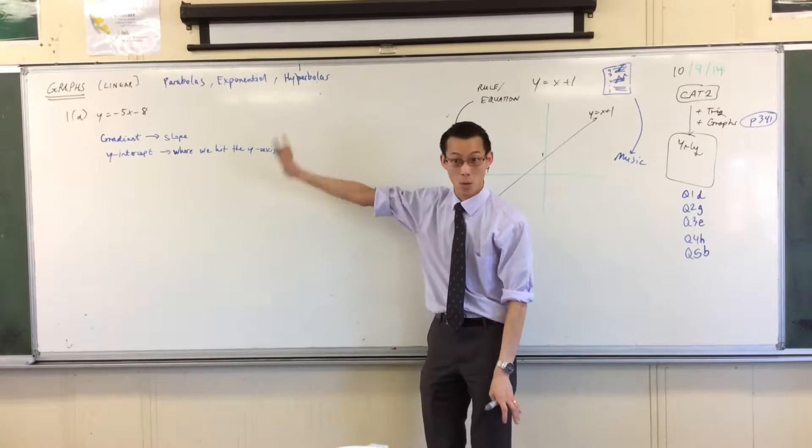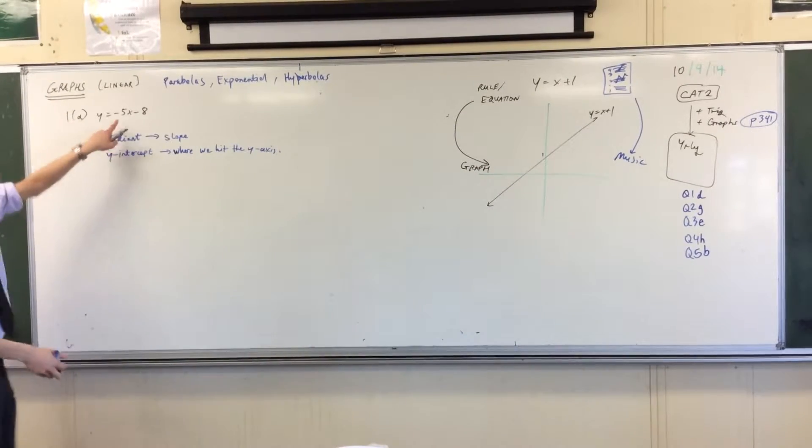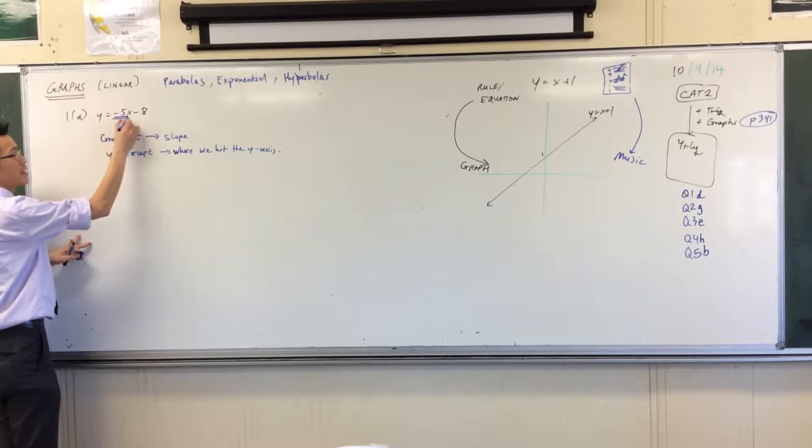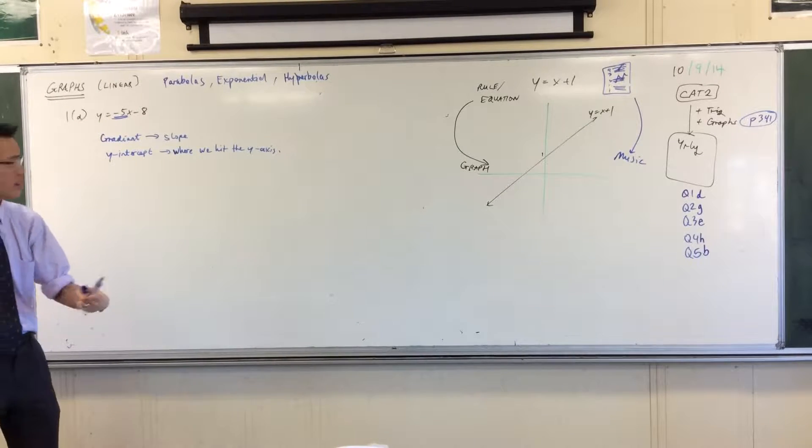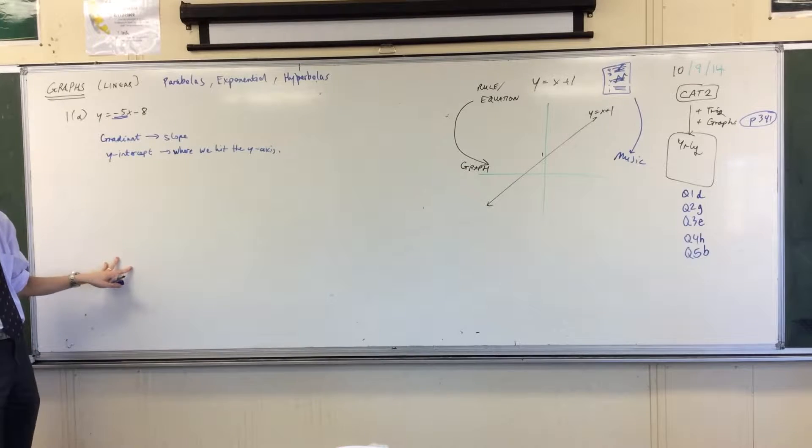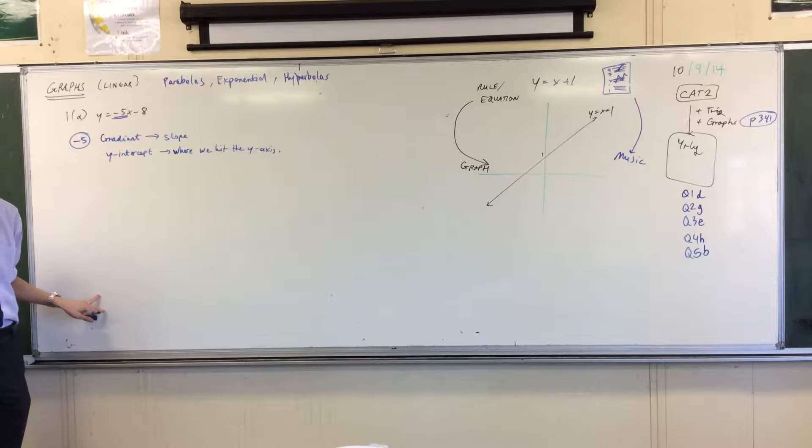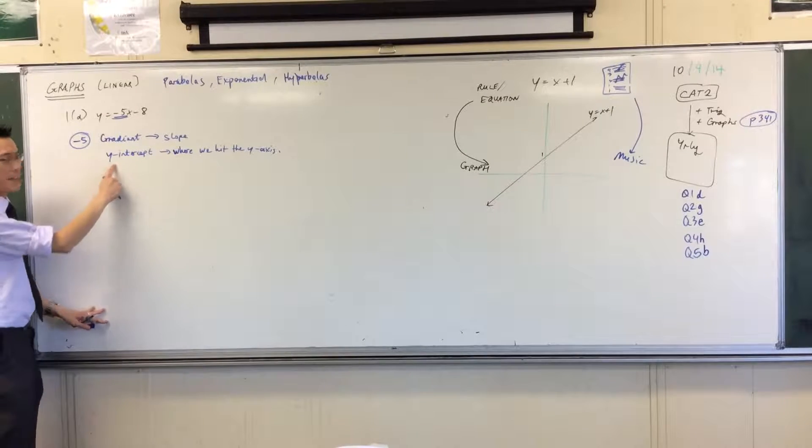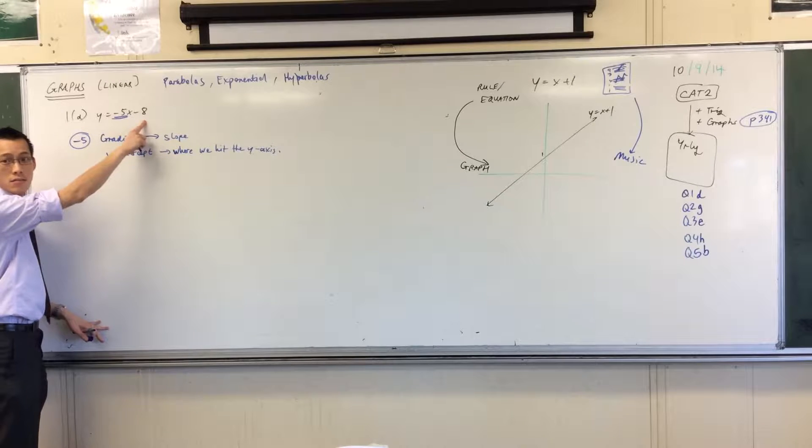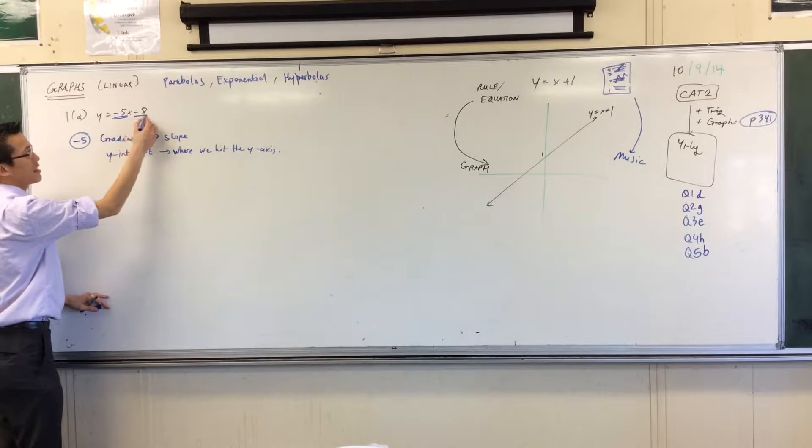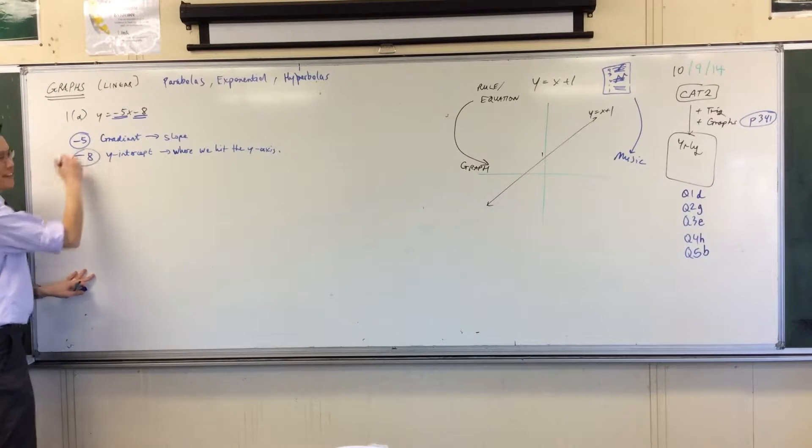You can just read them off the equation, right? Have a look. You can see there's this minus 5 out the front, and that is the gradient. Hopefully this is in your head from when we did coordinate geometry. If you can't remember that, go back and have a look at the past lessons. So that's minus 5, that's the gradient. Then you've got the other number which is the y-intercept. Now be careful, it's not 8, it's negative 8. It's got the negative in front. So it'll be negative 8.